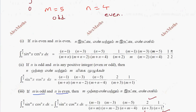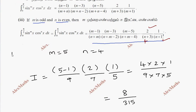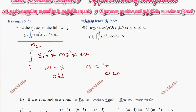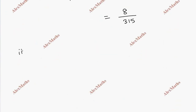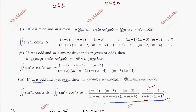Subdivision 2. Once again, this is equal to the general form. Now we compare: n is equal to 6 and m is equal to 4. So we have 4 and 6. Subdivision 2 has m equal to 4 and n equal to 6. Both are even numbers, so this is the even-even case. With the formula list, we apply the formula.